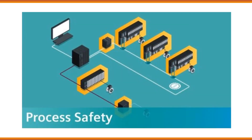Process Safety. Process safety in PCS7 encompasses measures and practices implemented to prevent and mitigate risks associated with industrial processes. It involves identifying hazards, implementing safety systems, and maintaining operational integrity to protect personnel, the environment, and assets from accidents or incidents.